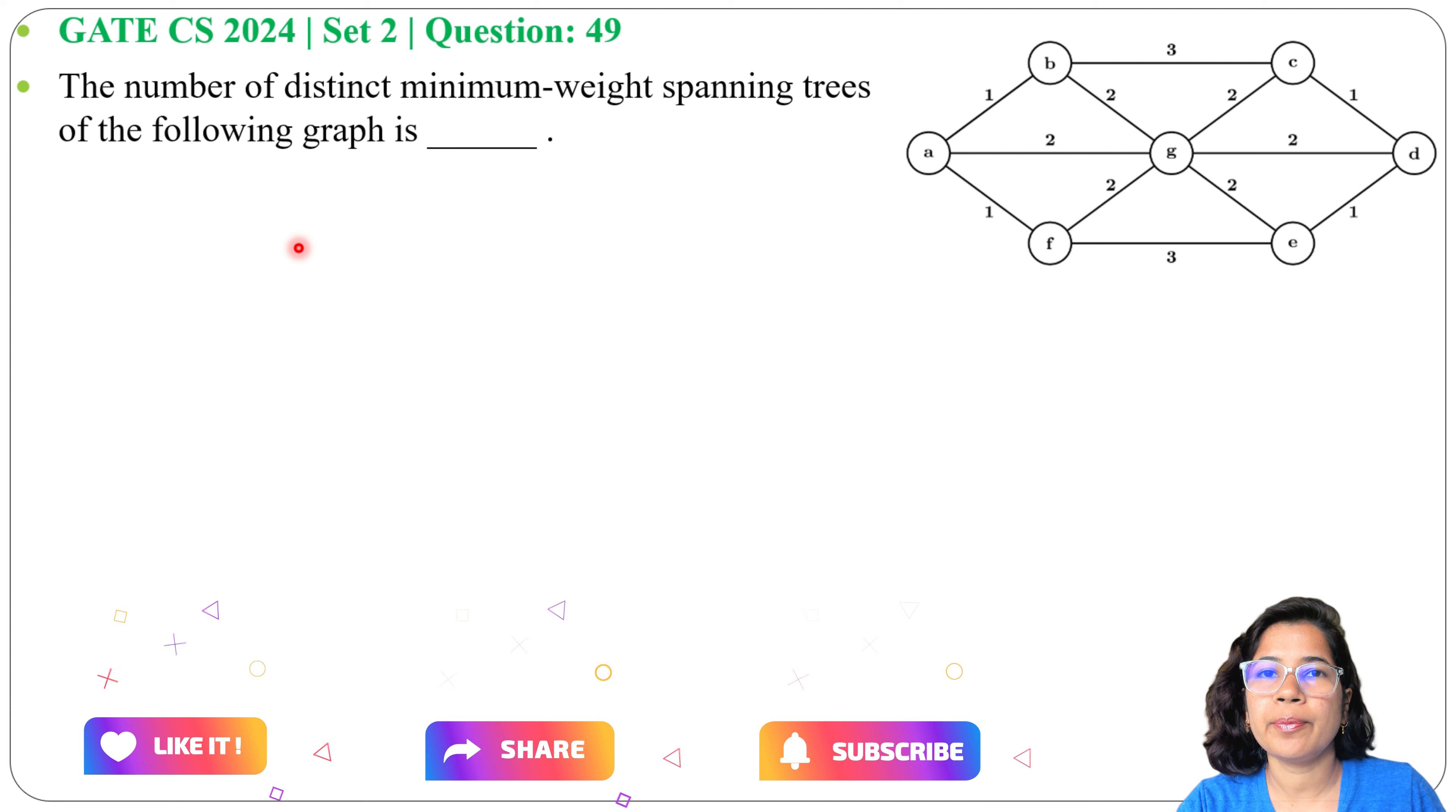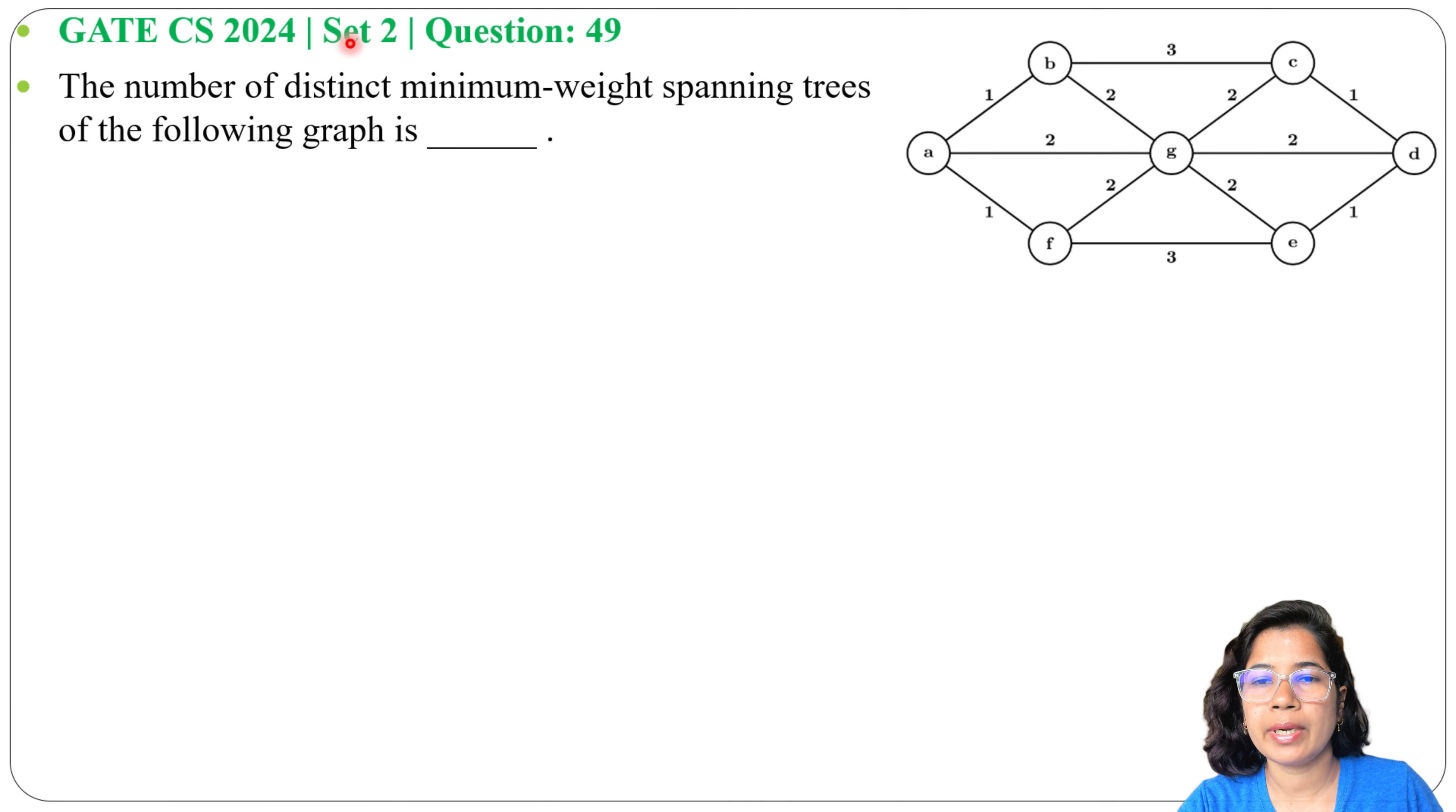Let's solve a previous question on minimum spanning trees. This question was asked in GATE 2024 Set 2, Question Number 49. The number of distinct minimum weight spanning trees of the following graph is - this is the graph.